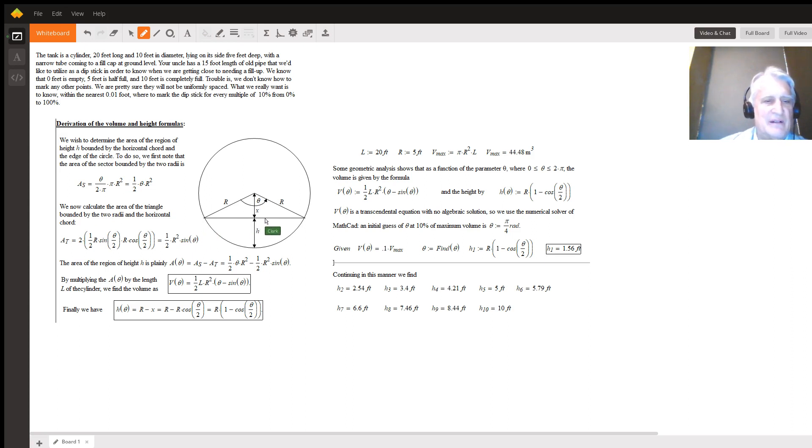The base of this triangle here is ½r times the sine of θ/2, and its height is r times the cosine of θ/2, that's x.